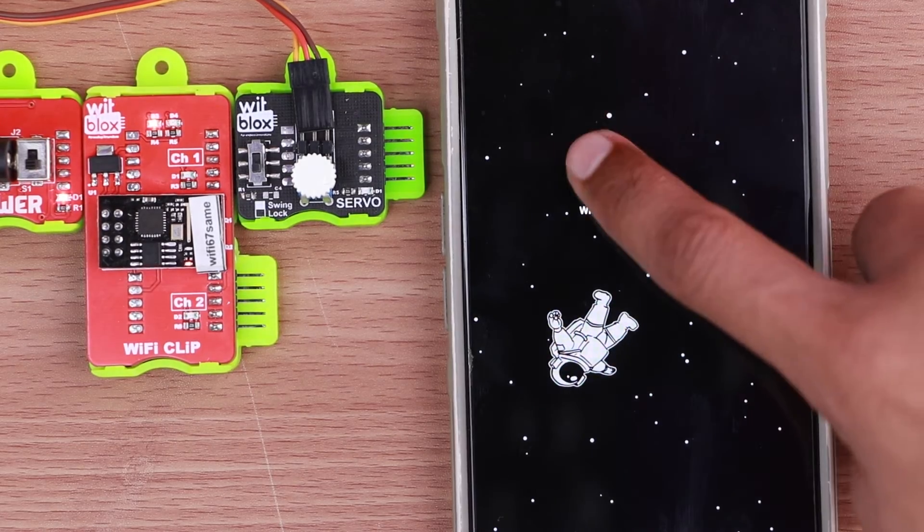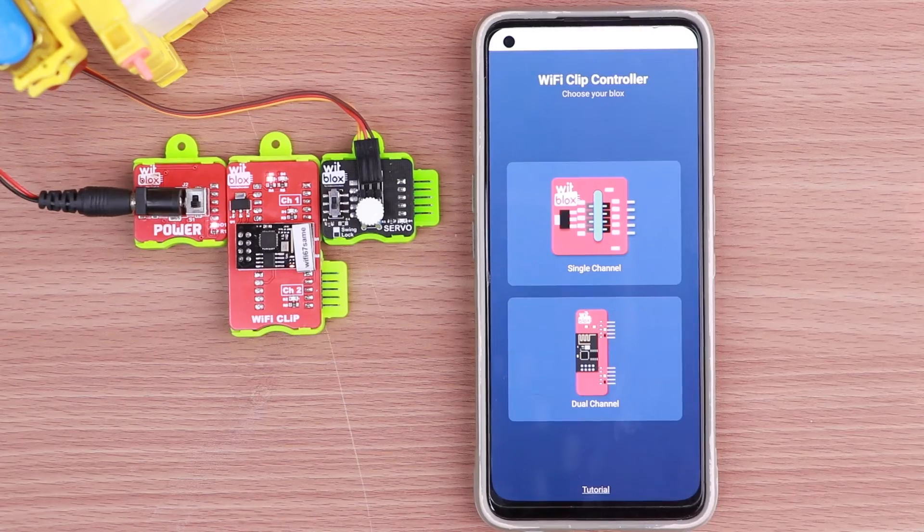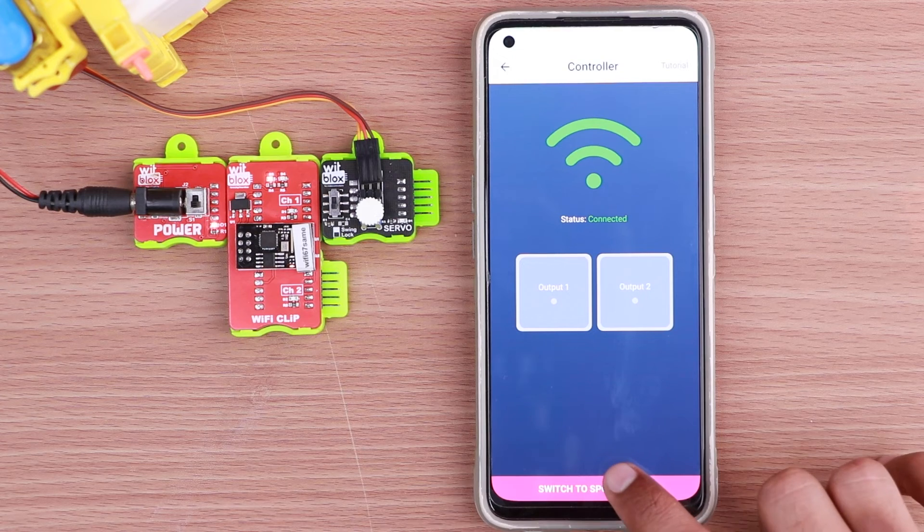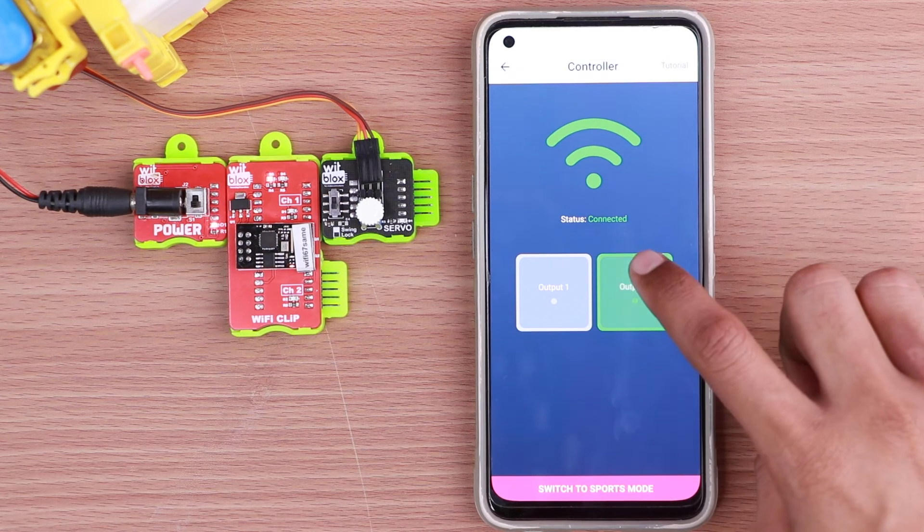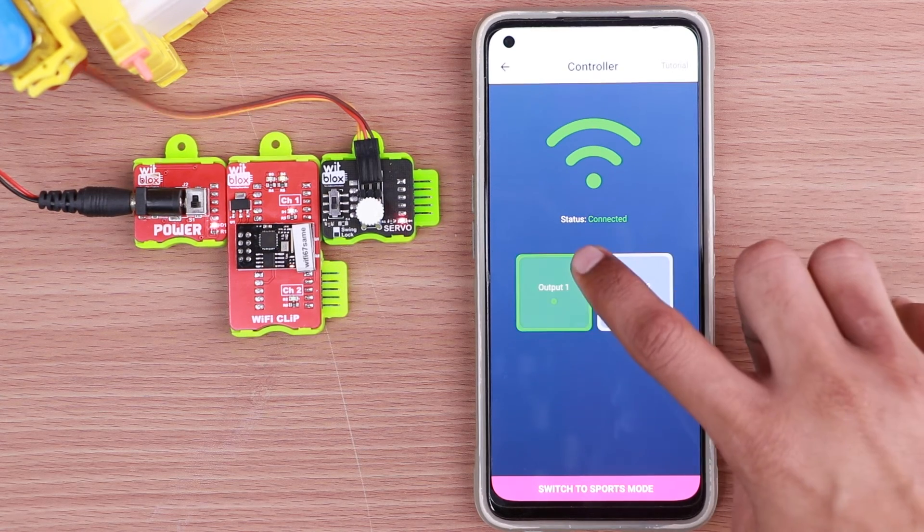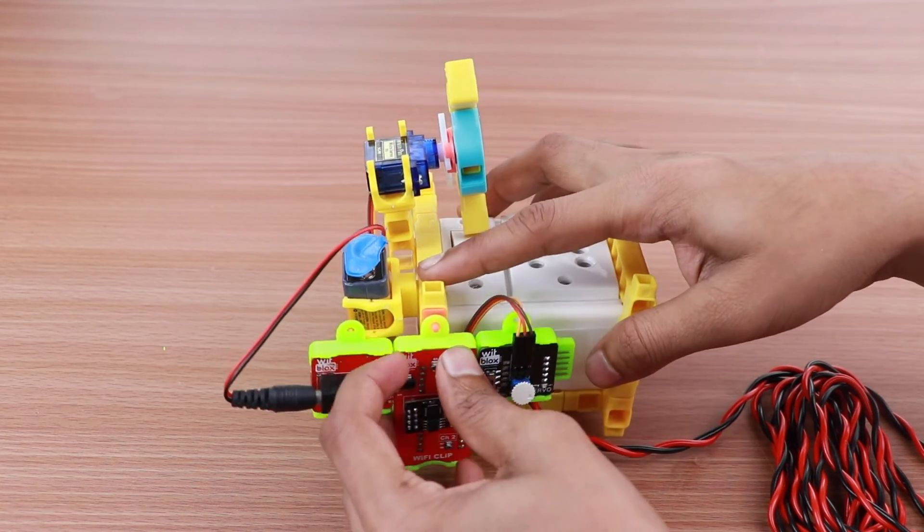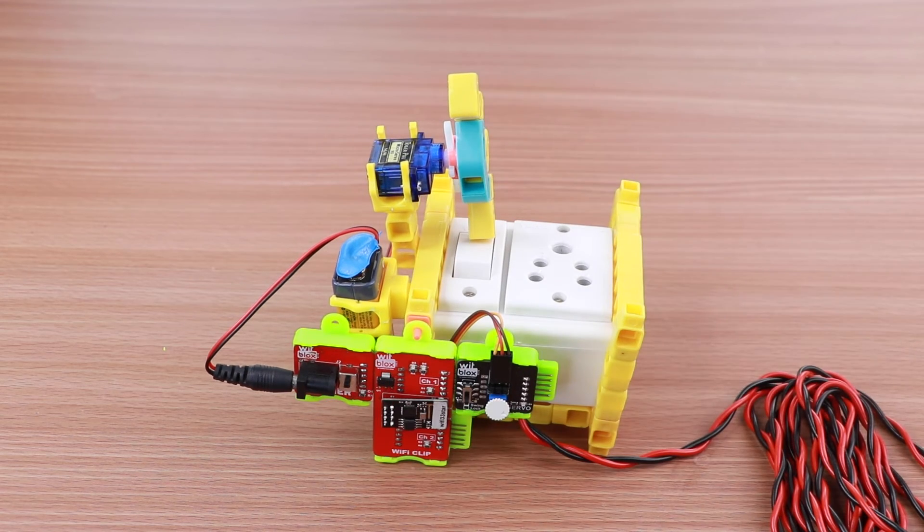Now head over to the Wi-Fi Clip app. Select dual-channel Wi-Fi blocks. There are two channels waiting for your command. Attach the blocks logic on the board and voila your Wi-Fi switchboard is now ready for use.